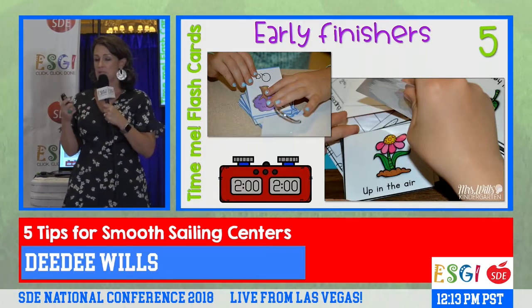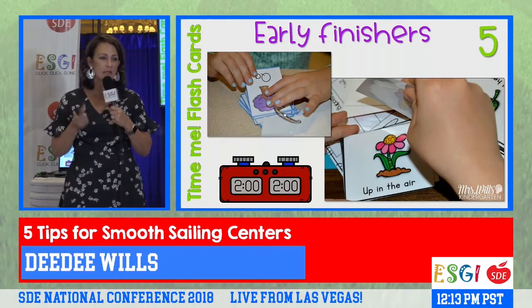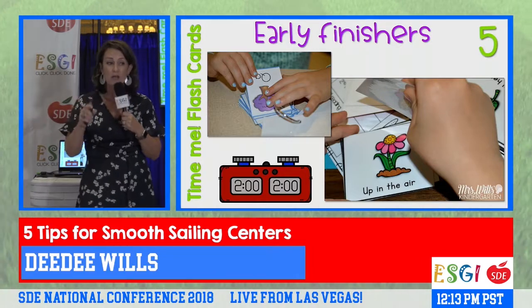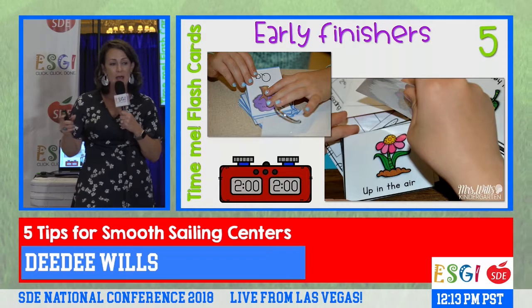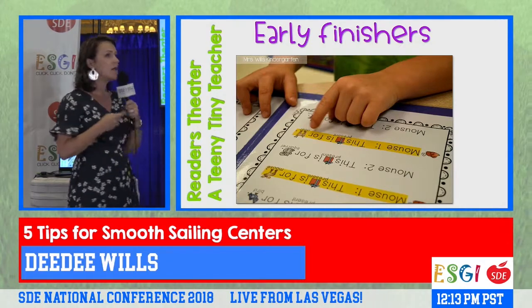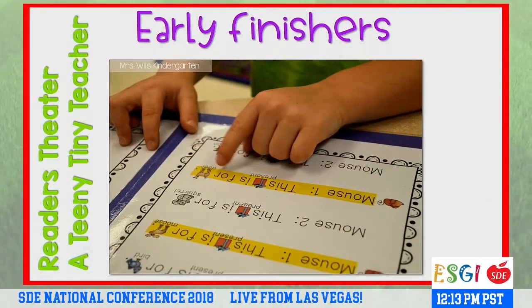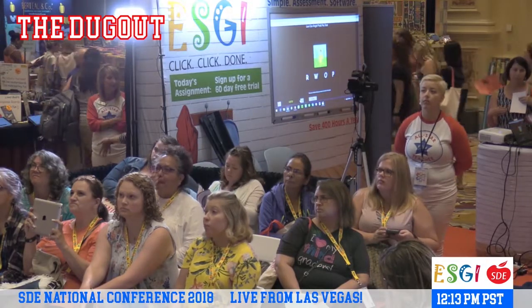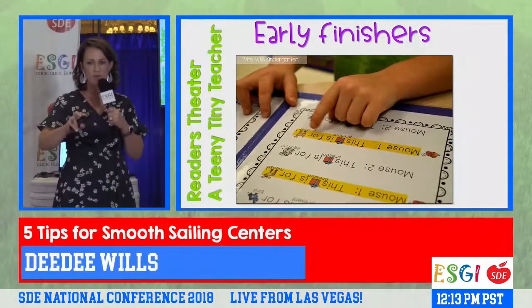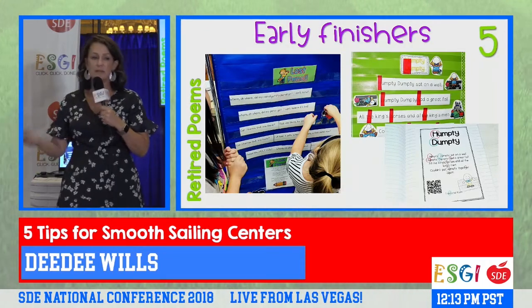You can also have a 'time me' activity — just flash cards with words or phrases, add a timer, and it's instantly a great activity. This is where ESGI really helps, because I can have multiple sets of cards tailored to student needs: one student working on letters, another on words, another on phrases. One of my classroom favorites was Reader's Theater by Teeny Tiny Teacher — available on Teachers Pay Teachers. It's a two-part play, and unlike most Reader's Theater for kindergarten it's just right — not too hard. Retired poems and songs can also go back in the bins.